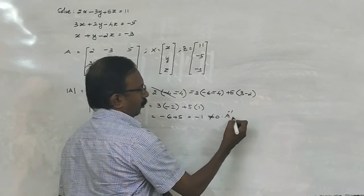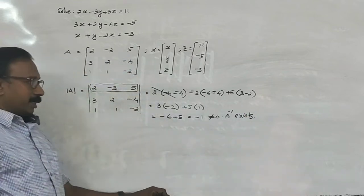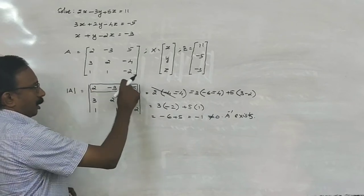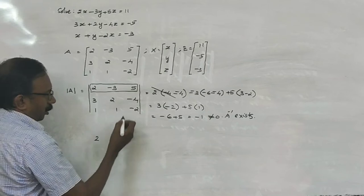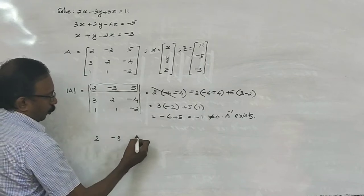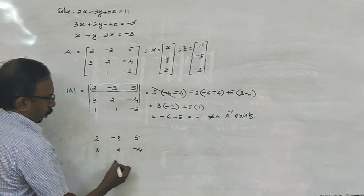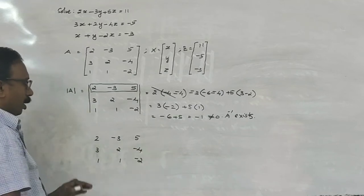Therefore, inverse exists. Here, inverse exists. The elements of the determinant we rewrite: 2, minus 3, 5; 3, 2, minus 4; 1, 1, minus 2. Now, write the first two columns again.